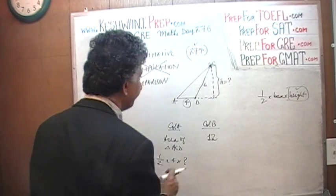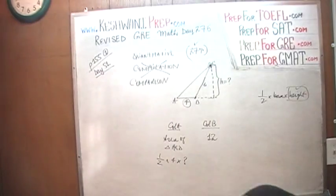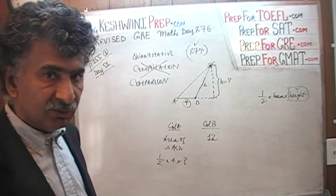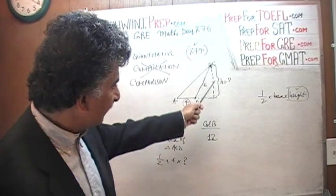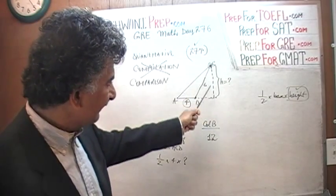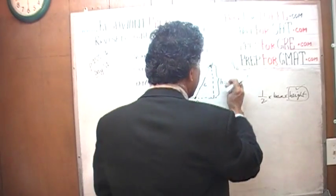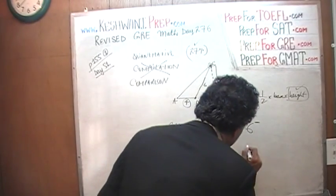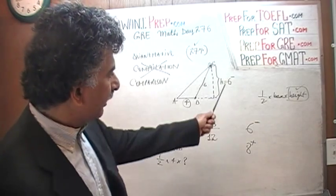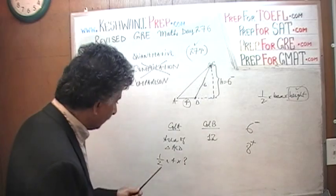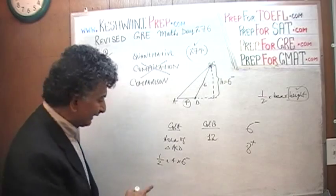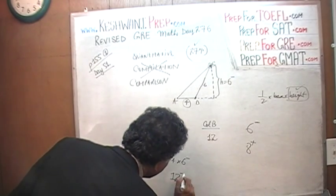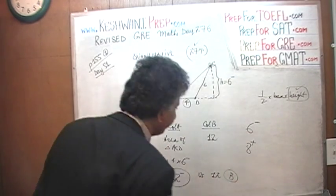We do not know the exact height, but we do know that side CD is 6. Since that side sits at an angle and equals 6, the perpendicular height from C to the base must be less than 6. So the area equals one half times 4 times something less than 6. Something less than 6 times 4 is something less than 24, and half of that is something less than 12. We are comparing something less than 12 versus 12. Of course the answer is B.